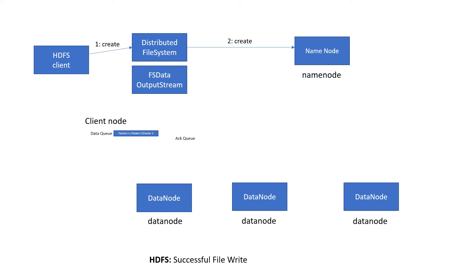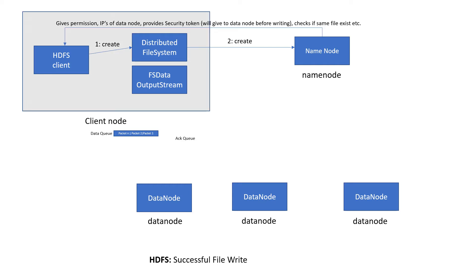But it will also do some other validations. It will give the client the IPs of the machines where the data has to be written — the available data nodes — and it will also provide a security token to the client.